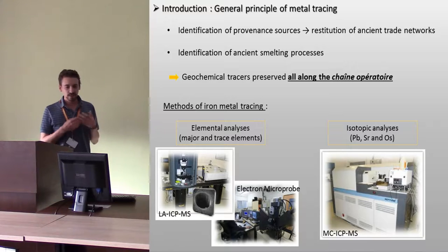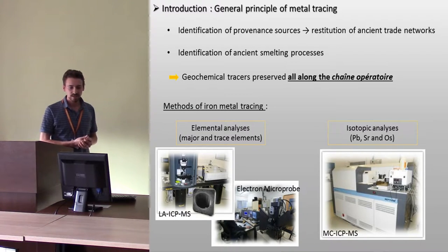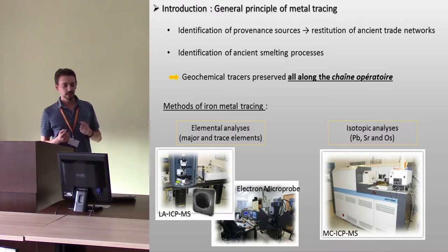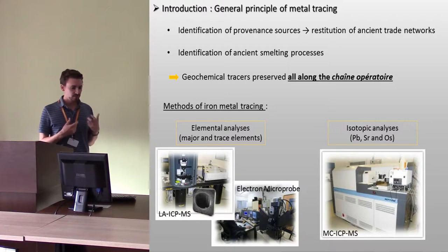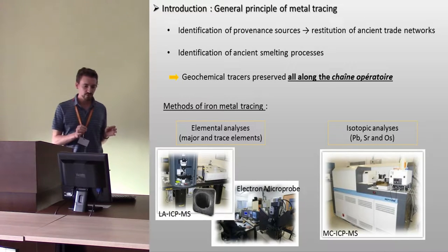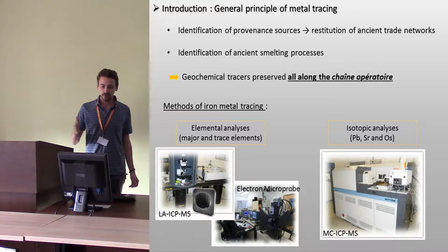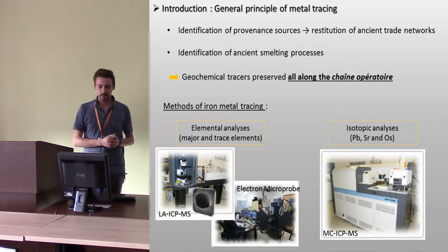Metal tracing first consists in the identification of provenance sources in order to restitute ancient trade networks. It also consists in the identification of ancient smelting processes. On this purpose, we tried to find some geochemical tracers which are preserved all along the chaîne opératoire, between the ore and the metal.